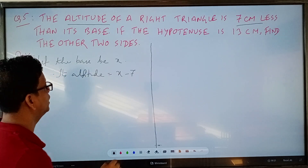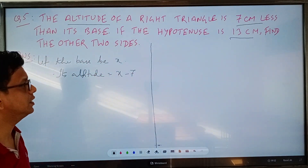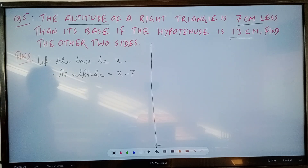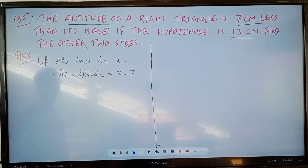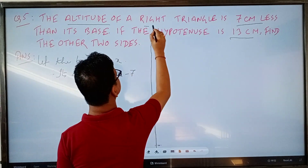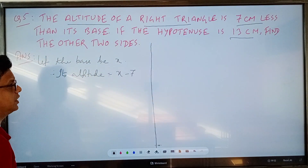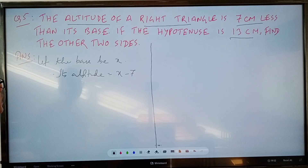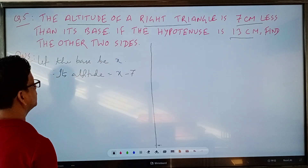Nothing else is given other than the length of the hypotenuse. In other problems we get a particular situation to form the equation, but here no particular situation is given. However, since this is a right angle triangle, we can use the Pythagoras theorem.